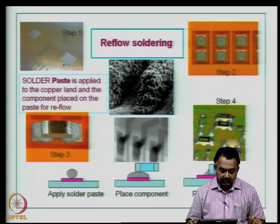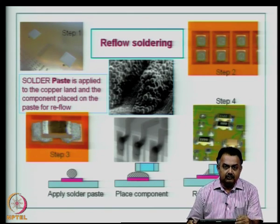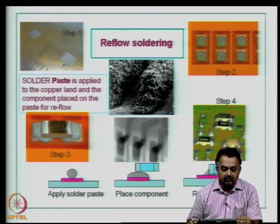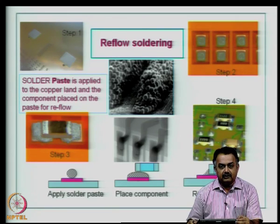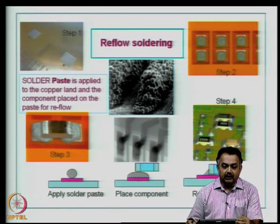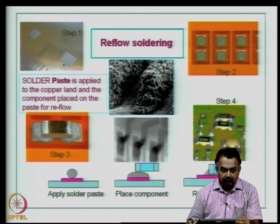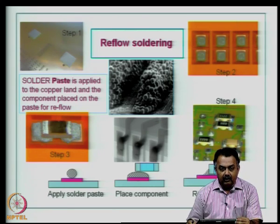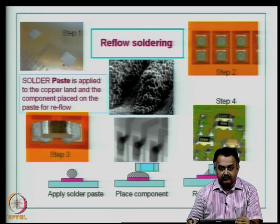We have introduced the topic of the soldering process. We have seen what manual soldering and machine soldering are. Obviously, for industry and large volume production, you have to depend on machine soldering. Here we are going to discuss different methods of machine soldering — one of them is reflow soldering and the other is wave soldering.